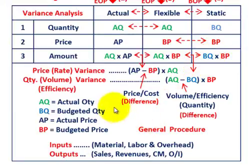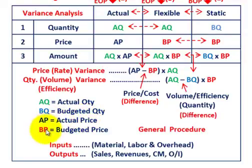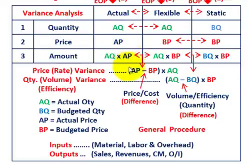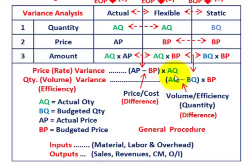That's the general procedure. Just to recap the color coding: AQ in green is actual quantity, BQ in blue is budgeted quantity, AP in black is actual price, and BP in red is budgeted price. Price or rate variances are between the actual and flexible amounts based on the price difference, and quantity, volume, or efficiency variances are between the flexible and static amounts based on the quantity difference.